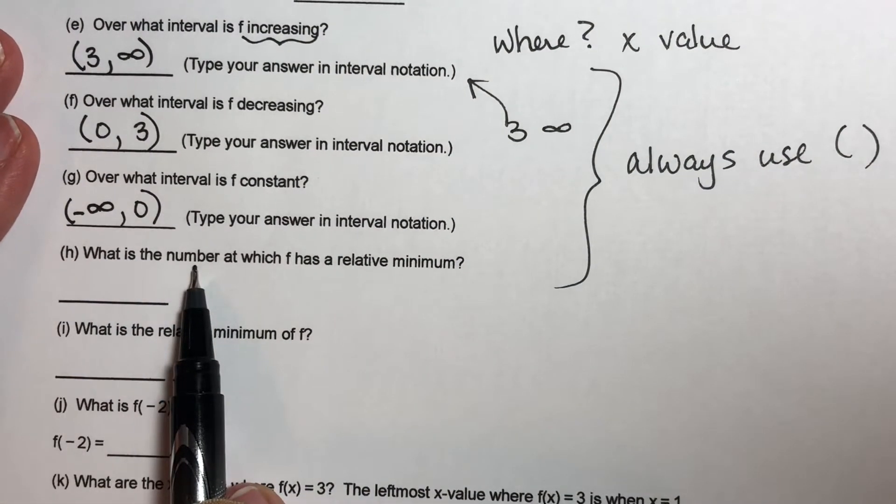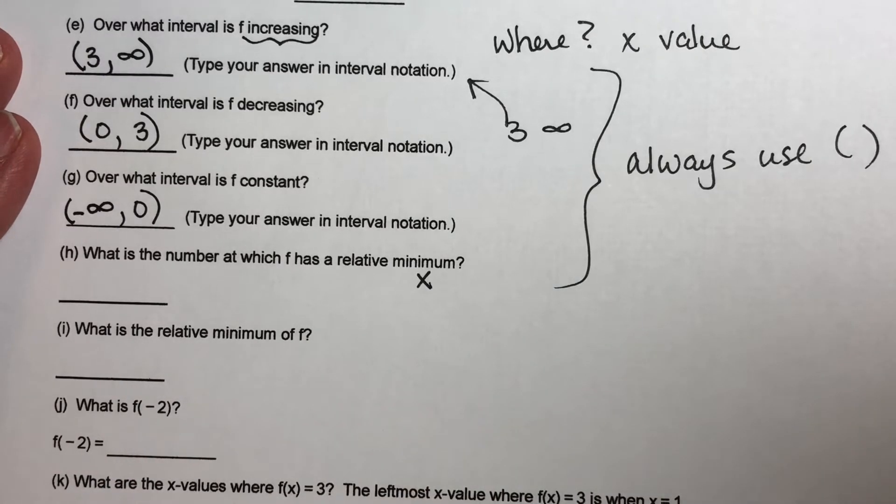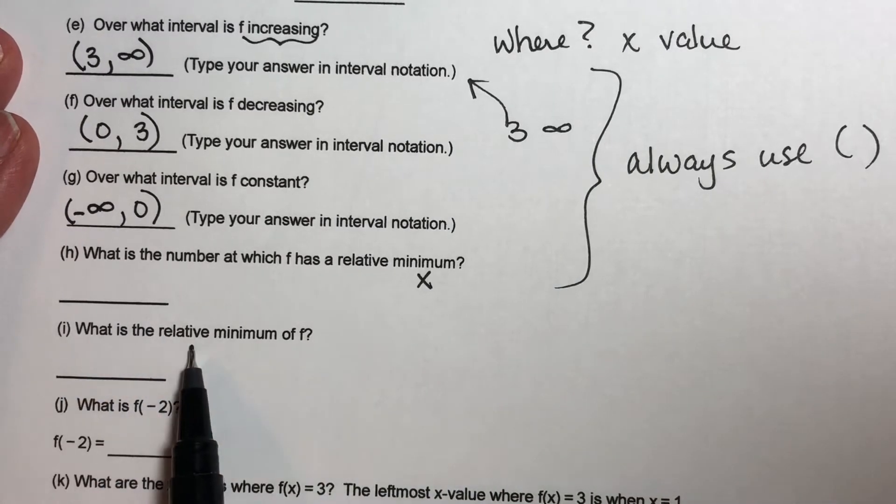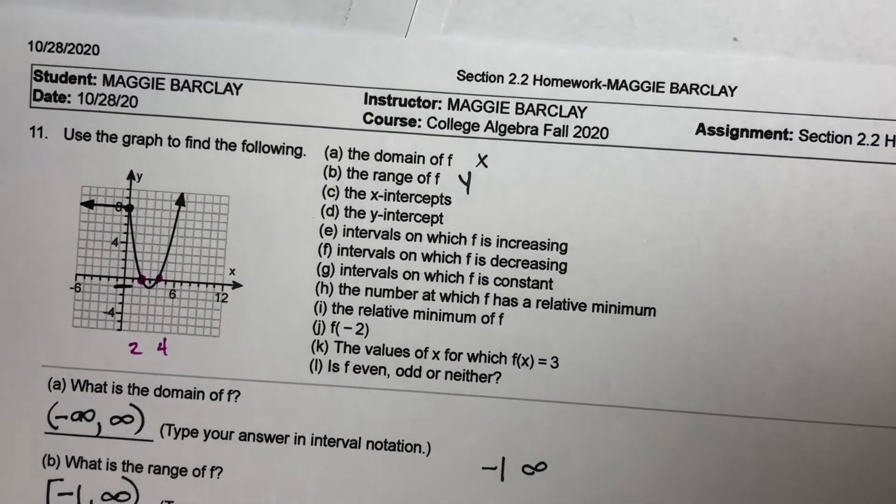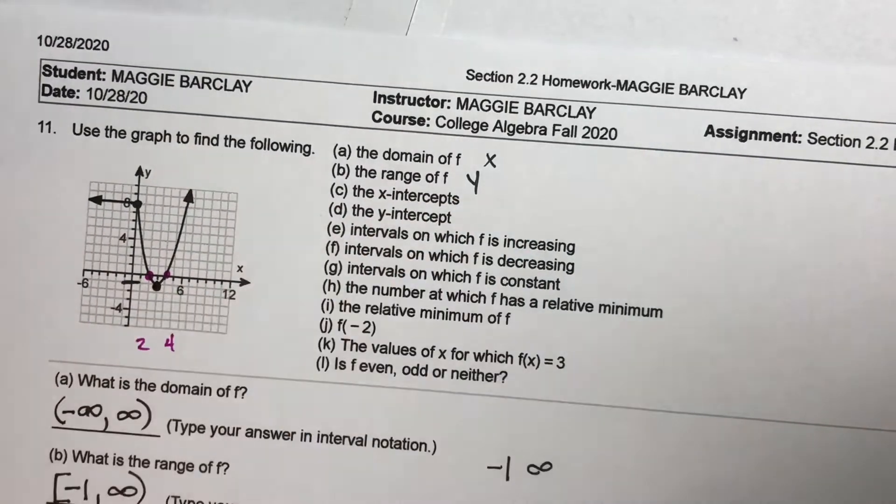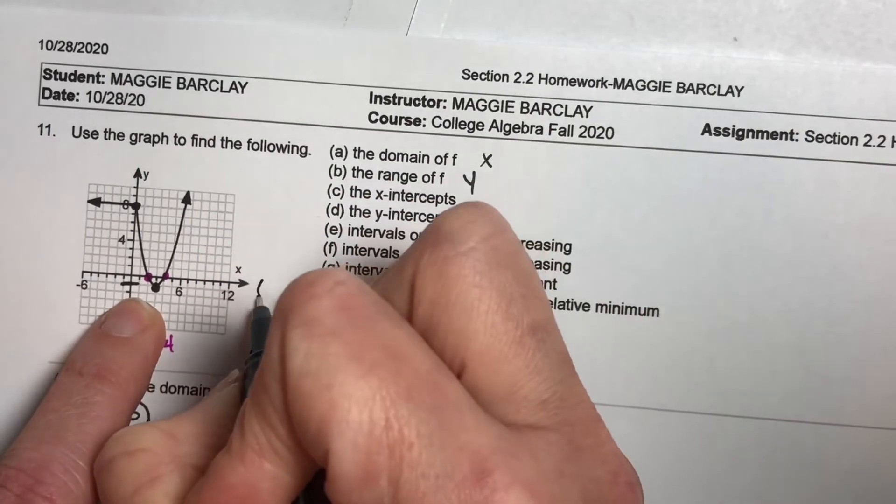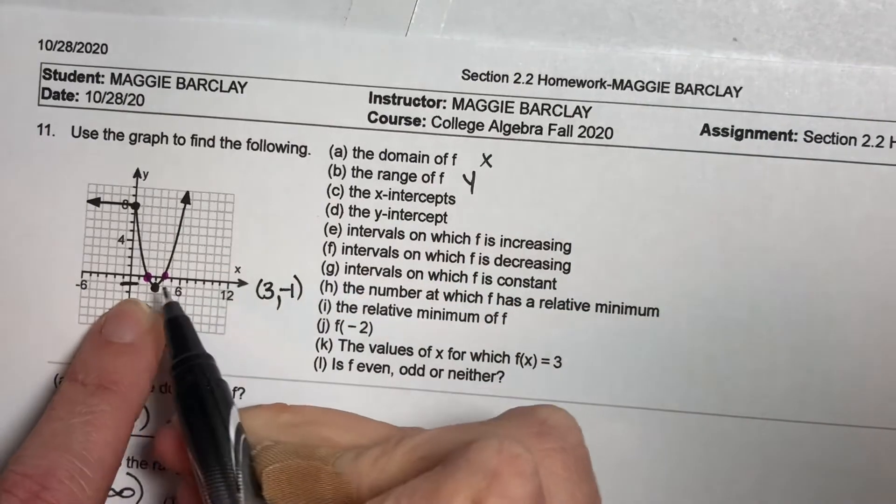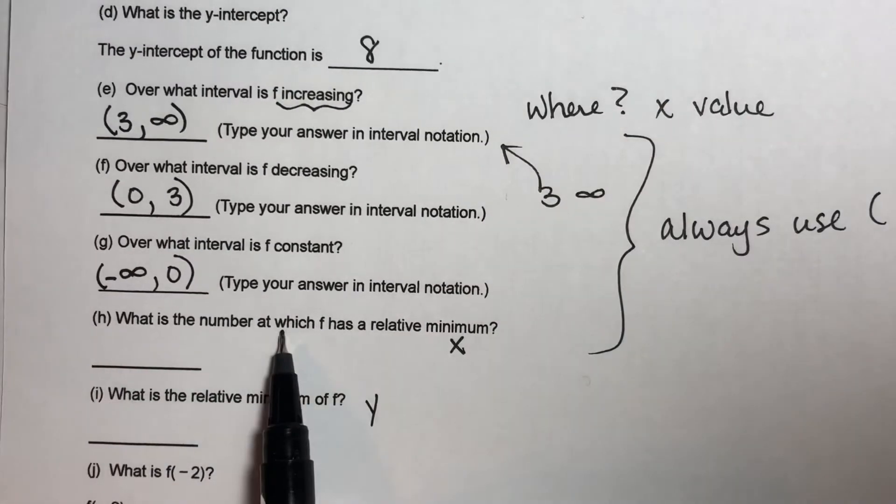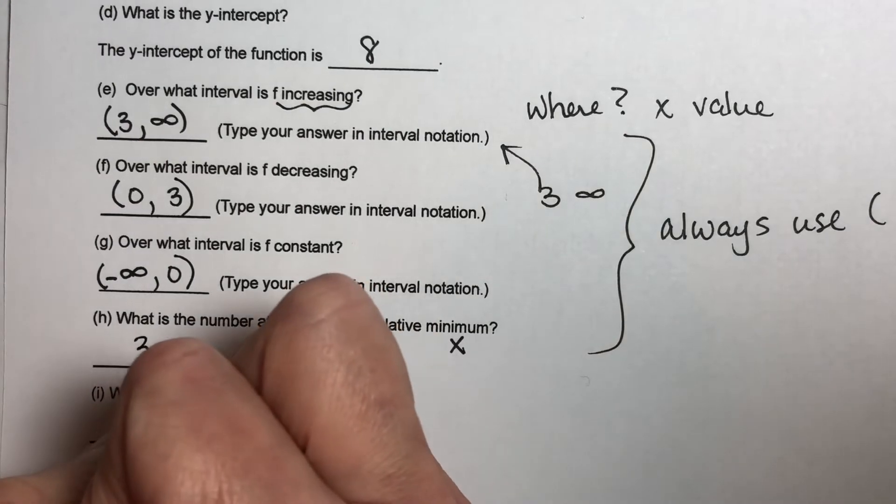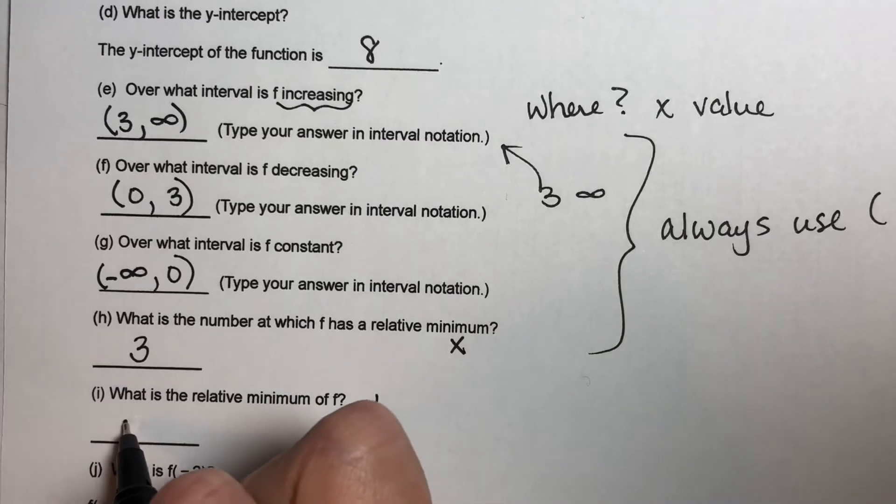What is the number at which f has a relative minimum? This is asking for your x value. Where is this thing relatively smaller than everything else? And then what is the relative minimum of f? This is the y value of it. Where is our graph smaller than everything else around it? Right there. That point right there is smaller than everything else around it. It is a relative minimum. What point is that? 1, 2, 3, and negative 1. That point where it's the smallest is 3, negative 1. So where, at what number, has a relative minimum? That's our x value, which was 3. What is the relative minimum? That's our y value. And our y value for that point was negative 1.